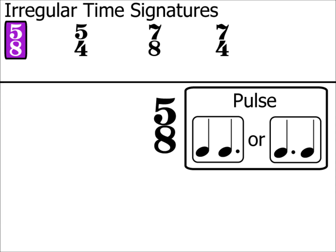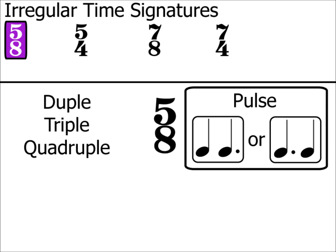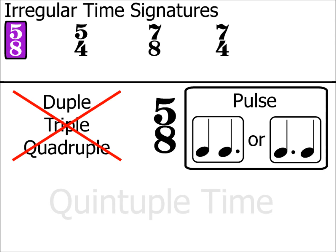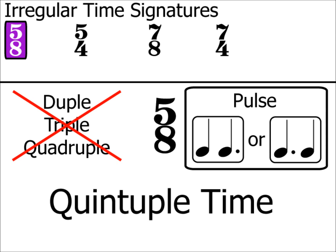Even though 5/8 is an irregular time signature, and therefore not simple or compound, is it duple, triple, or quadruple? Well, it's actually none of them. You might ask why it is not duple, as there are two pulses in 5/8. It's because each pulse is not equal — calling 5/8 duple would suggest two equal beats. It is therefore a quintuple time signature, quintuple meaning five. I'll add this name to the time signatures at the top of the screen.